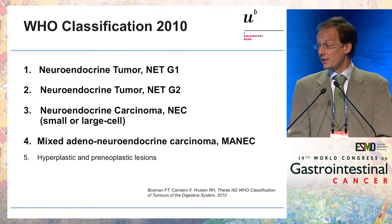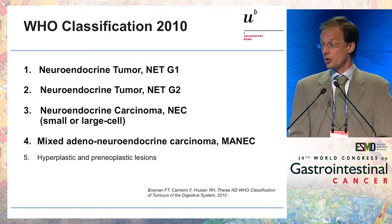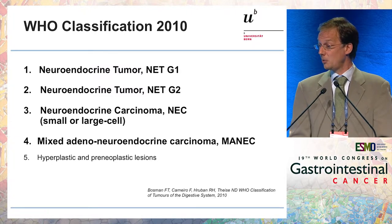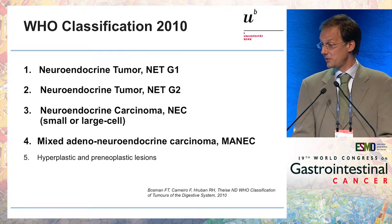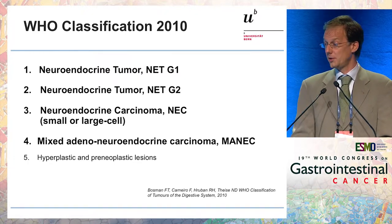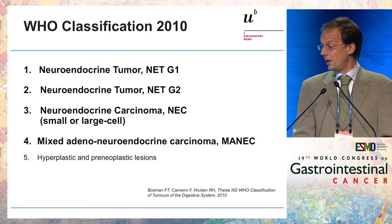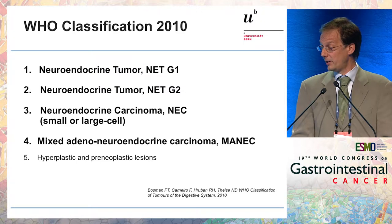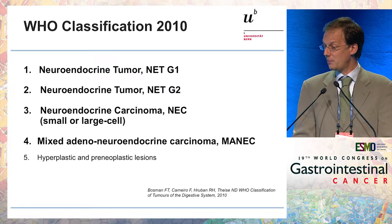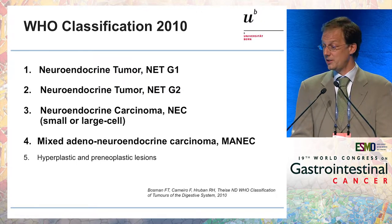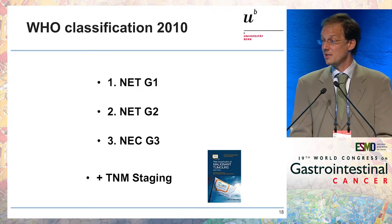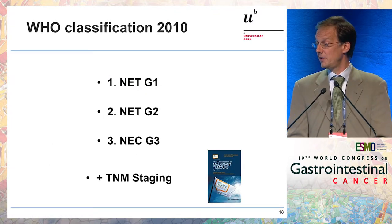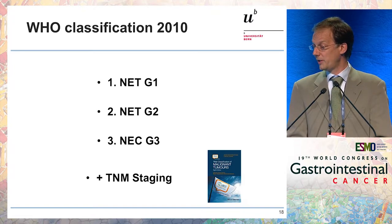This was the outcome of introducing grading, taken into the WHO classification 2010: neuroendocrine tumor G1, neuroendocrine tumor G2, and neuroendocrine carcinoma — with different names, small cell or large cell neuroendocrine carcinoma, as in the lung, which are all G3 by definition. And then we have the mixed tumors, which I will not talk about today. So this 2010 classification is easy: NET G1, NET G2, NEC G3.